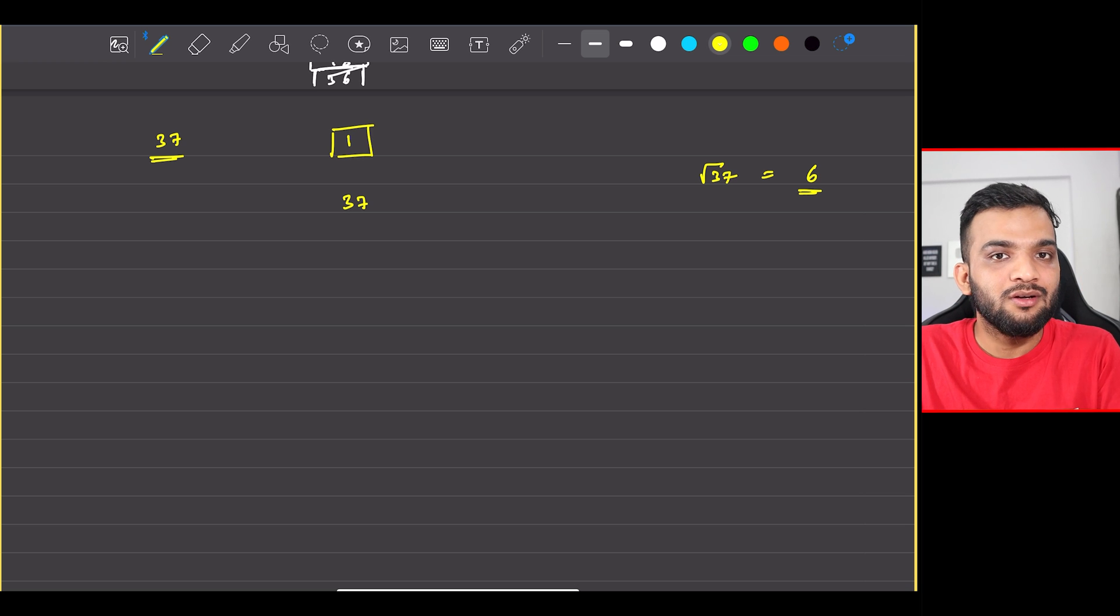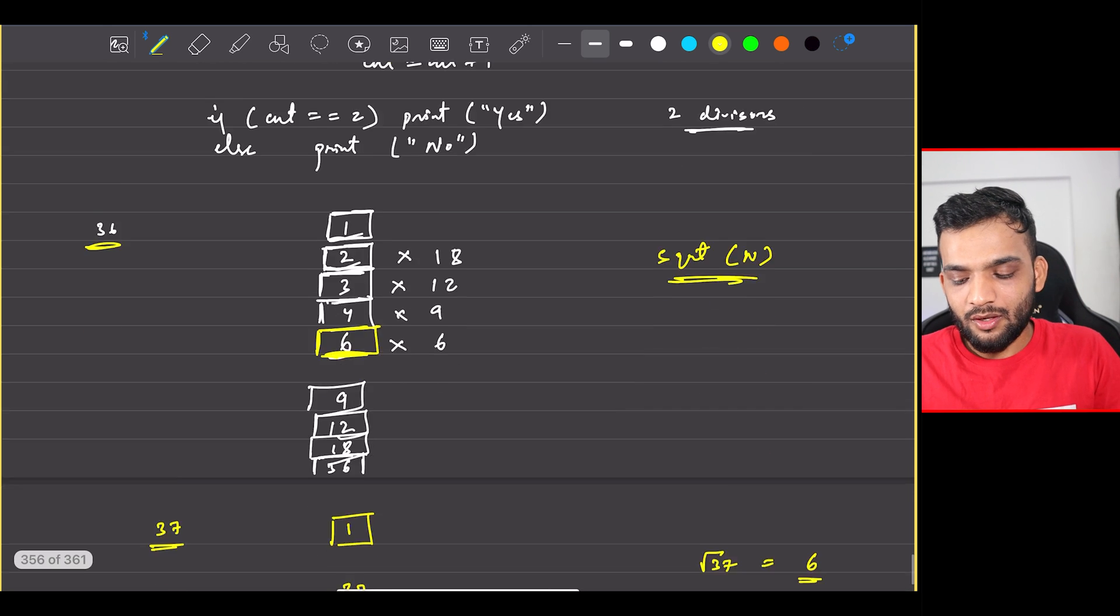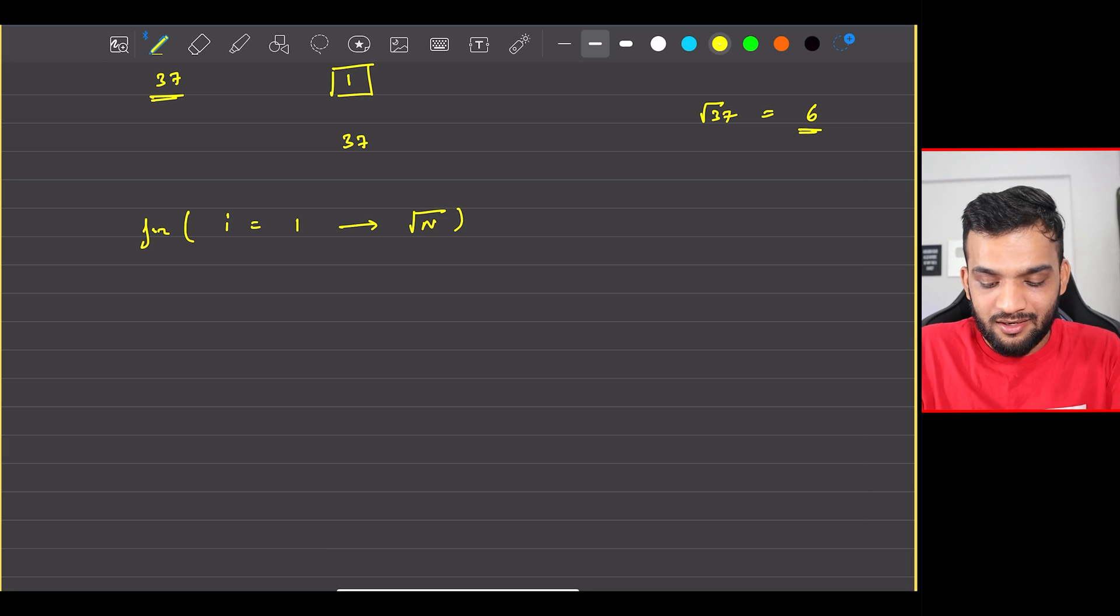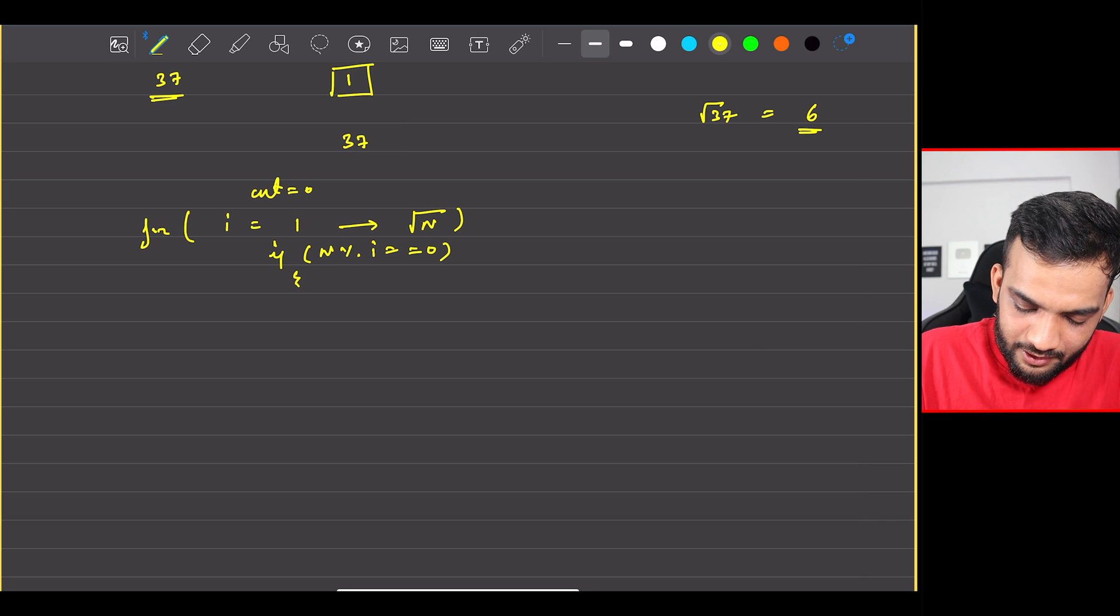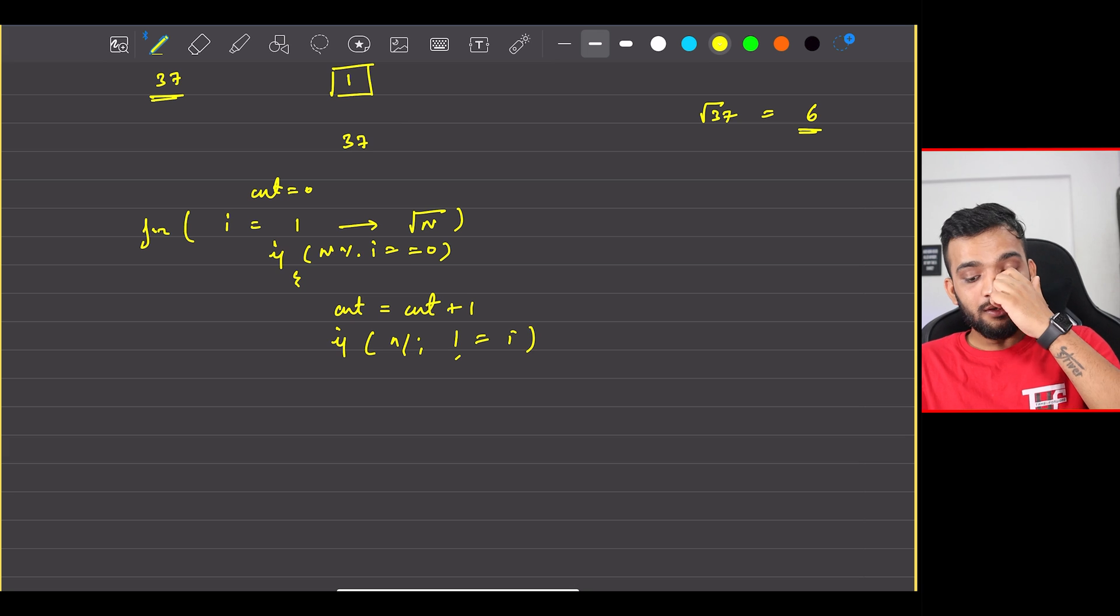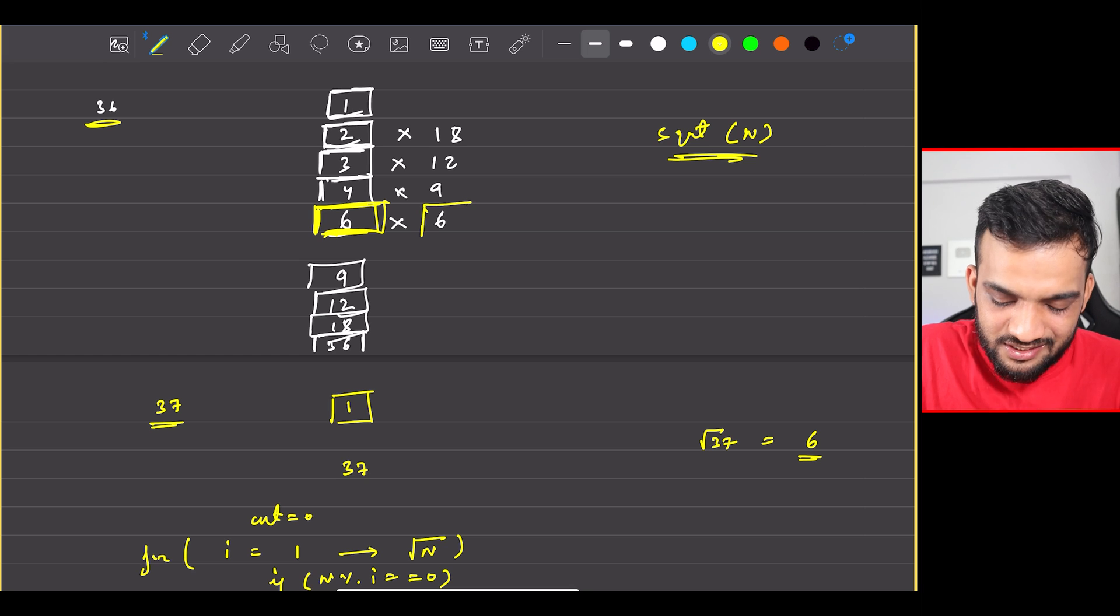Instead of checking till n, I can run a loop from i equal to 1 till square root of n. I can have a count equal to 0 and say if n modulo i equals 0, do counter equal to counter plus 1. At the same time, if n by i is not equal to i, this is very important. If I'm counting the other divisor, if this is 6, the other divisor is 6 as well - we cannot count 6 twice.